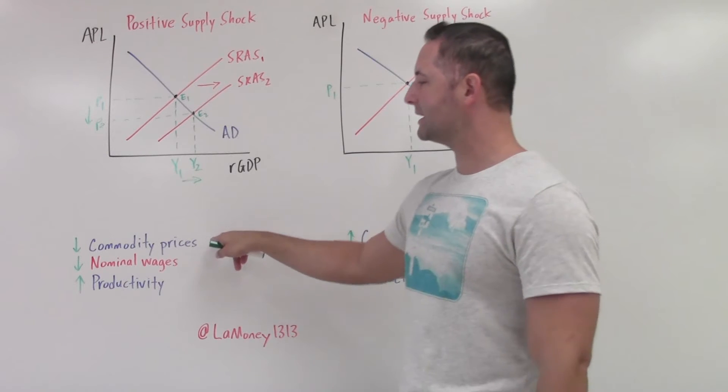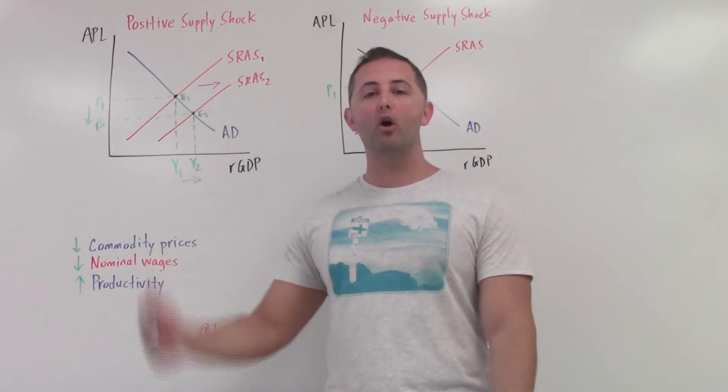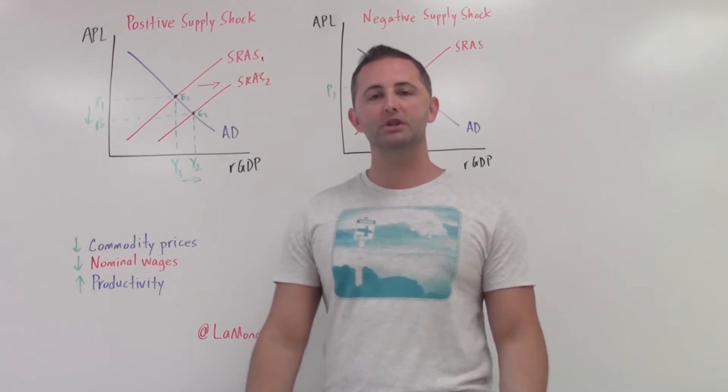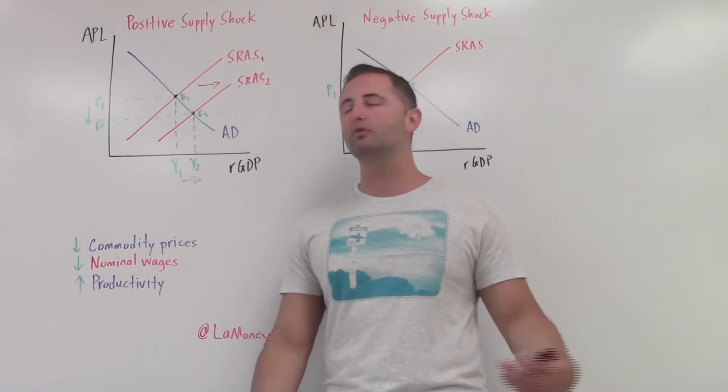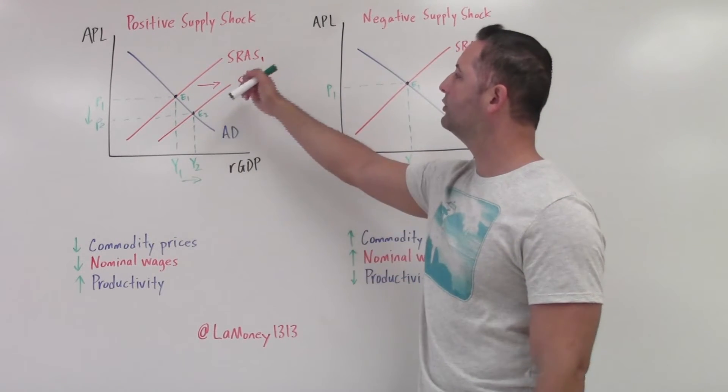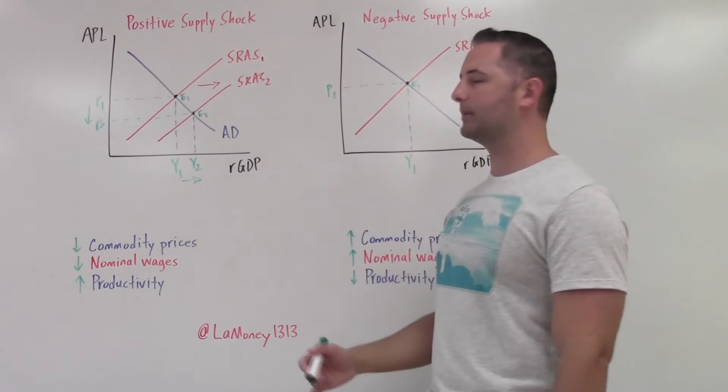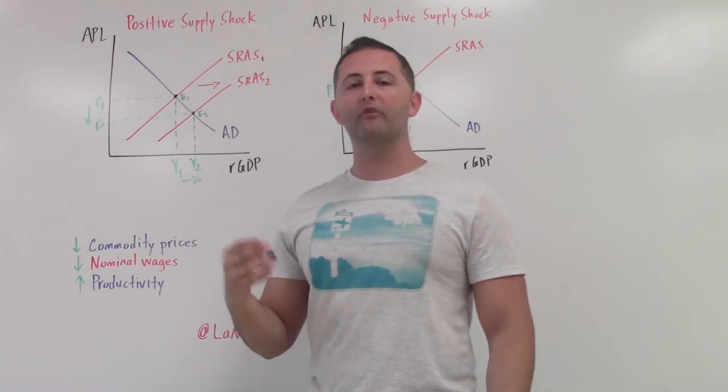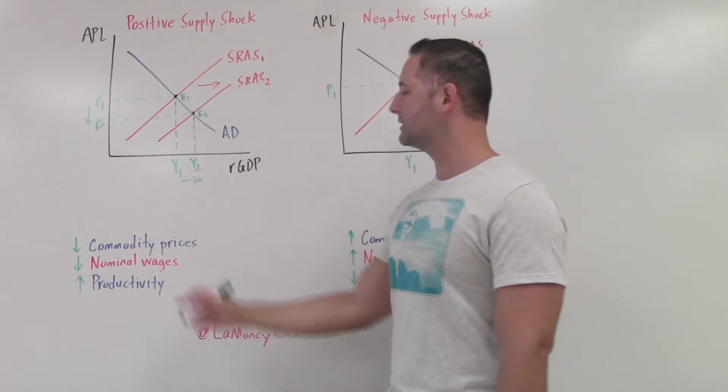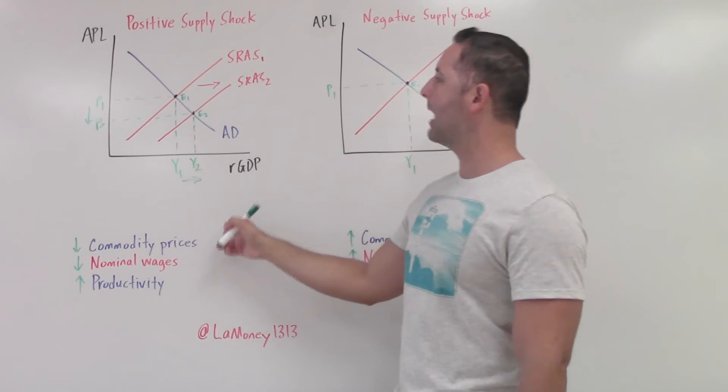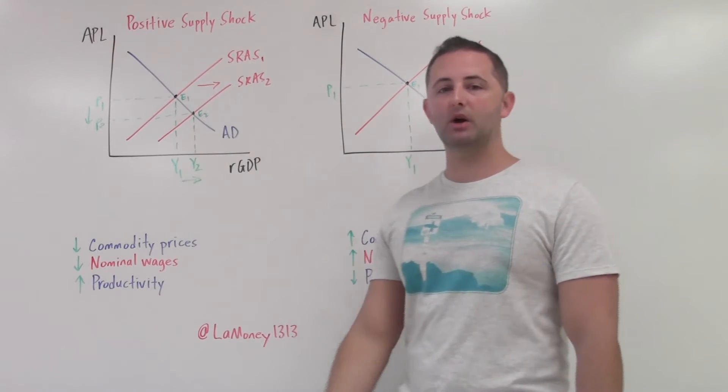So we have a decrease in commodity prices. Oil prices fall. It makes cheaper transportation. It makes it cheaper to fuel your factories or fuel whatever you need. So that is going to help increase aggregate supply for not just one company, but for most companies throughout an economy. So falling commodity prices shift the SRAS curve to the right.